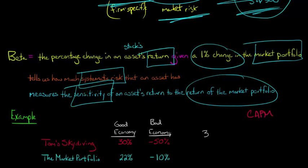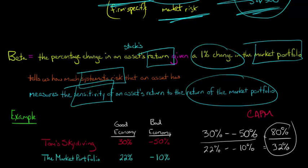So what we're going to do, I'm basically going to take the range here. So we'll take 30% minus negative 50%. So that's going to be 80%. We're going to have a fraction. And so in the denominator, we're going to have the market return, which would be 22% minus negative 10%, which is going to be 32%. So now we've got 80% divided by 32%. So what is that going to come out to? That is going to give us 2.5%. So the beta of Tom Skydiving is 2.5%.